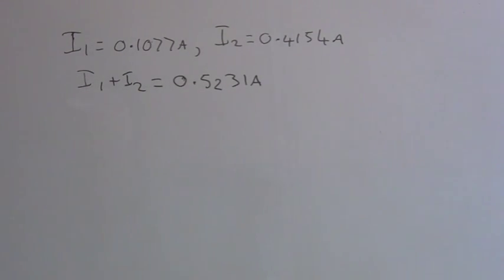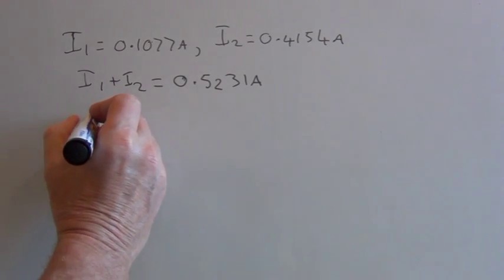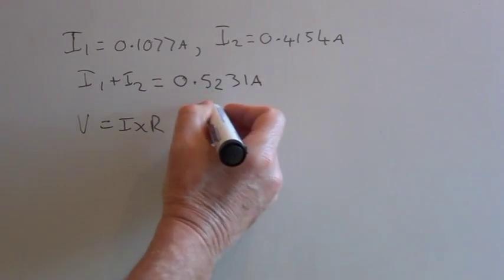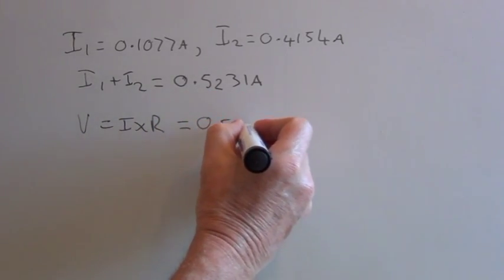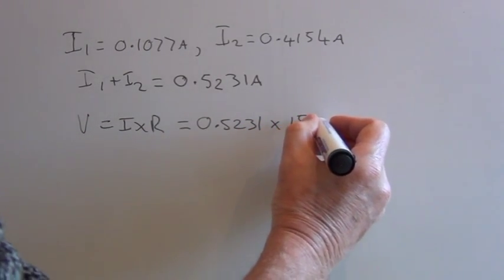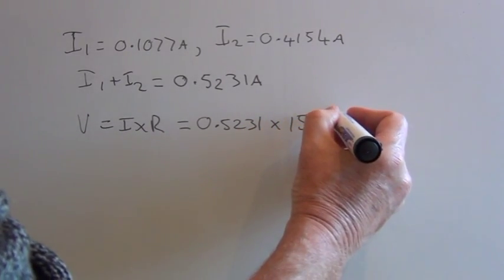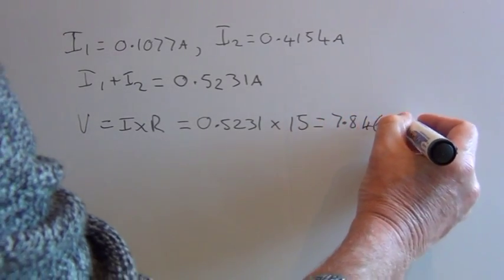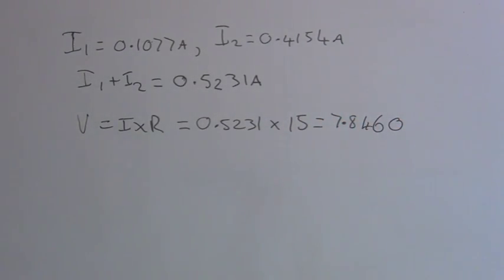So from the ohms triangle, we have V equals I times R. So we know the current now, which is 0.5231, times that by the 15, and we get the voltage across the resistor of 7.846 volts.